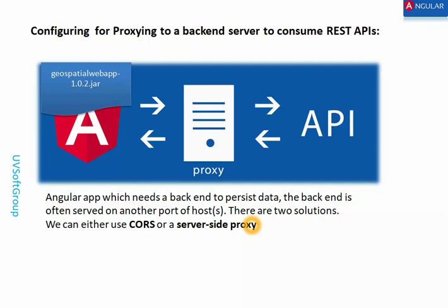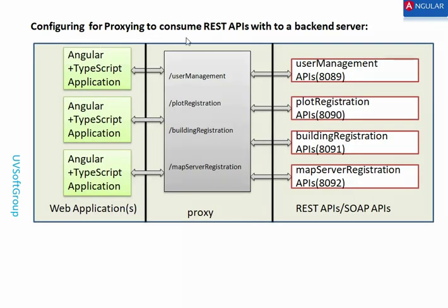There are many solutions available — you can Google and find them. When I start development I will show you how it is done. Here is the proxy configuration: in an Angular TypeScript-based web application, you may have three components making up one web application. The proxy is defined for user management, plot registration, building registration, and user map services — all located on different machines in different parts of the world, each with different ports.